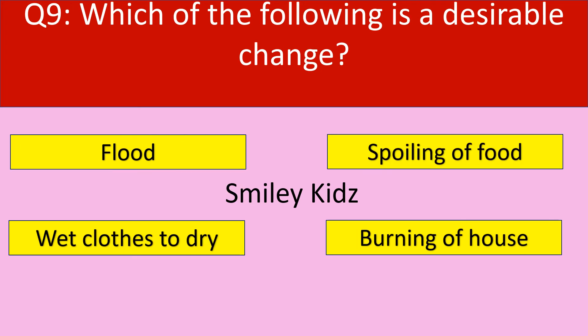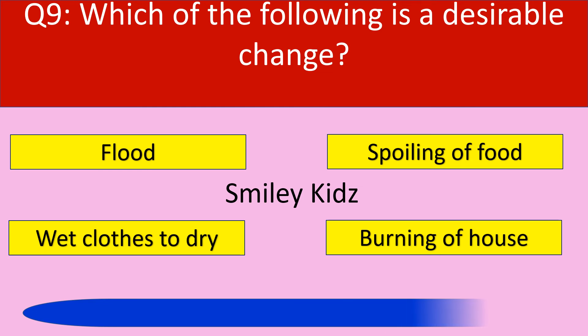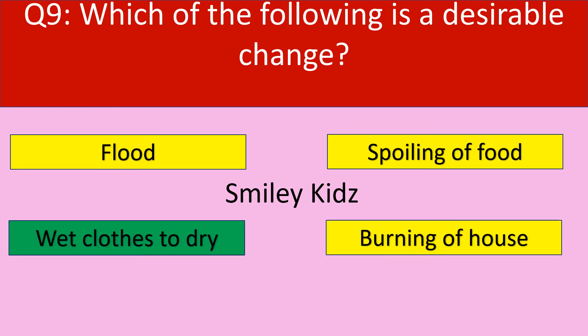Question number 9. Which of the following is a desirable change? Your options are flood, spoiling of food, wet clothes to dry, burning of house. Your time starts now. Your time is up and the correct answer is wet clothes to dry. Wet clothes to dry is a desirable change.